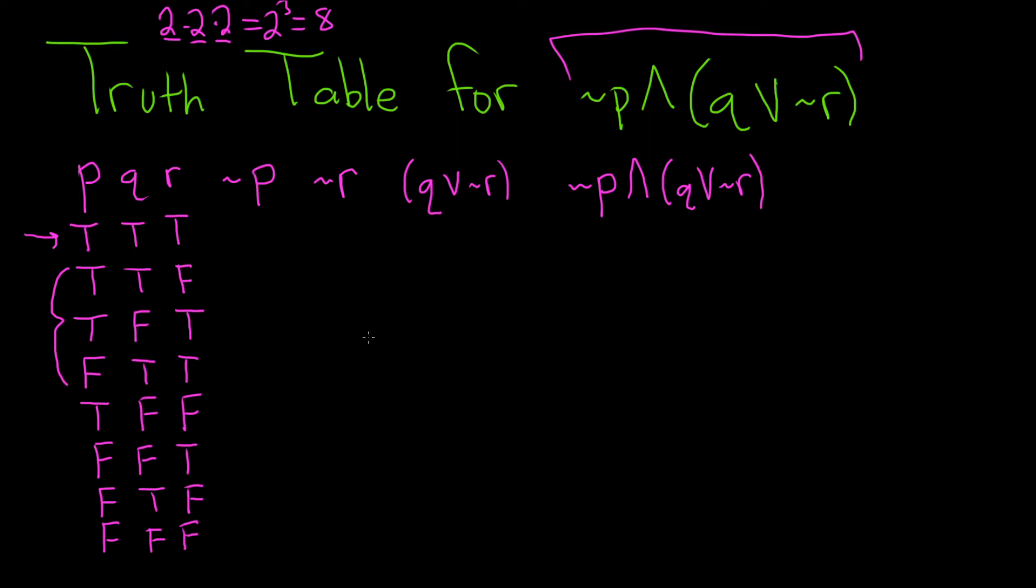Let's go ahead and fill in this table, one column at a time. So for not P, we simply have to look at the column where P is and take the negation, which means we just take the opposite truth value. So the opposite of true is false, then false again, and false again. Here the opposite of false will be true. The rest are false, so they're all going to become true.